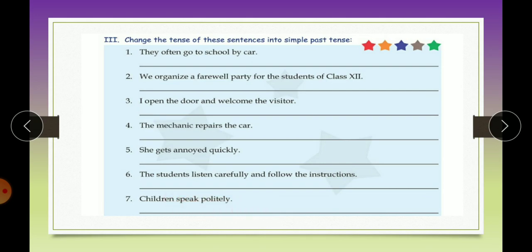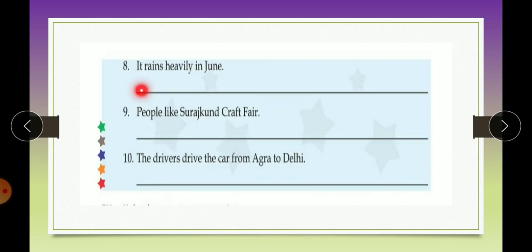Children speak politely. Speak is the verb. Change it into the second form - spoke. Children spoke politely. It rains heavily in June. Rain is the verb. Change it into second form - rained. It rained heavily in June. People liked Suraj Kund craft fair. Like is the verb. Change it into past - liked. The drivers drive the car from Agra to Delhi. What is the verb? Drive. Second form will be drove. The drivers drove the car from Agra to Delhi.